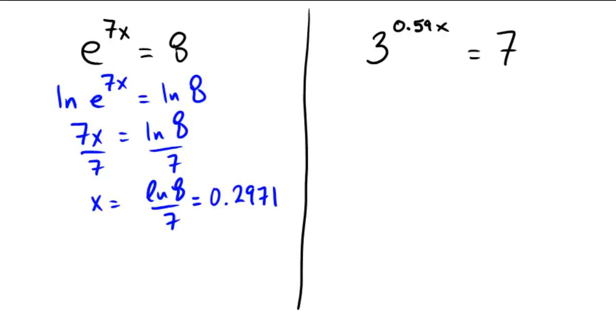Let's log it again. So ln 3 to the 0.59x equals ln of 7. 0.59x ln of 3 equals ln of 7.